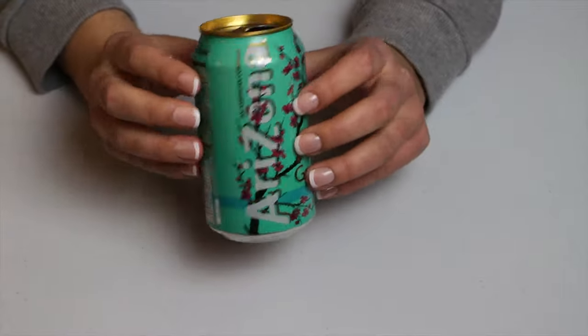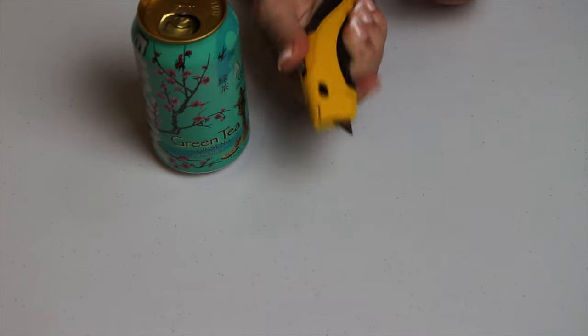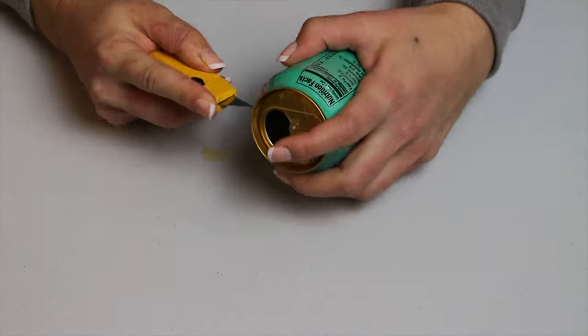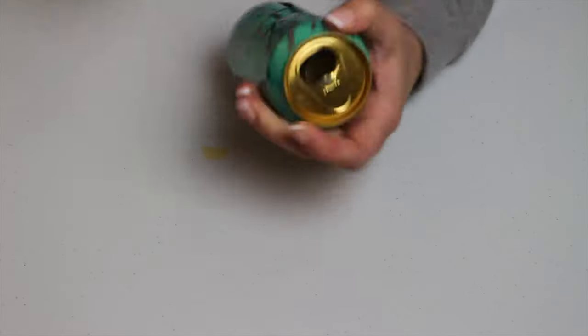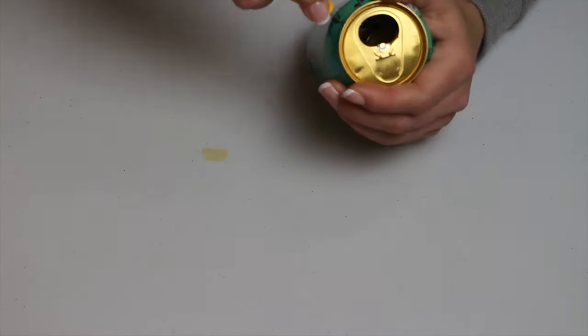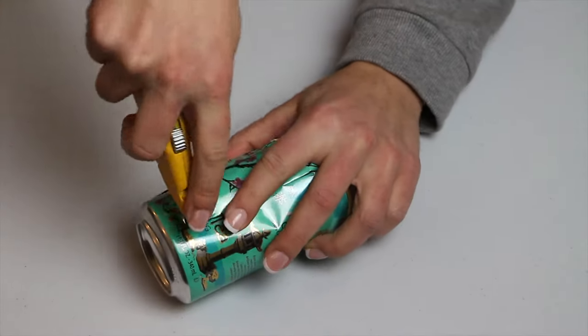Anyway, here's the Arizona tea can. You want to remove the pop tab and make sure that it's cleaned out and that there's no soda left in it, well in this case tea. And then I got my box cutter and just trimmed some of my favorite areas of the can which included the flower and tree.